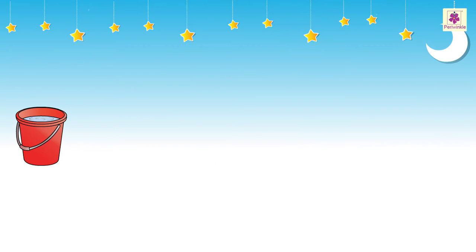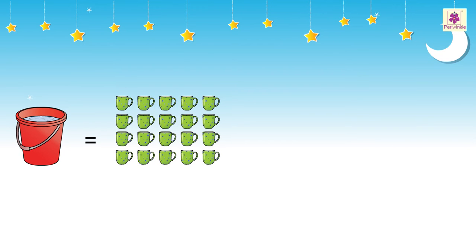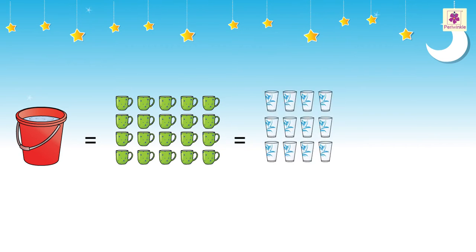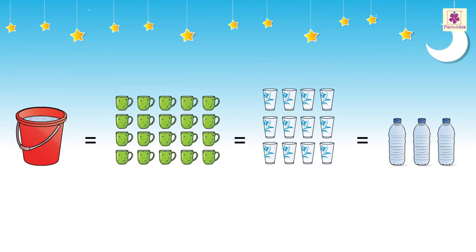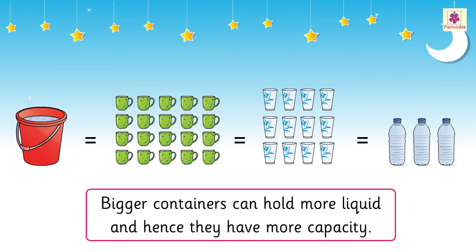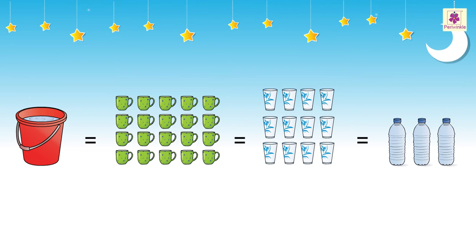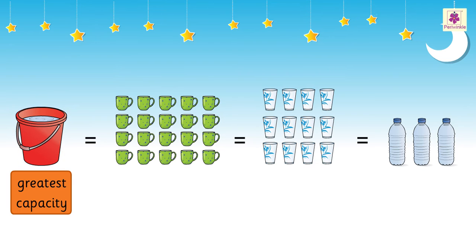Look at this bucket. It can hold 20 mugs of water, or 12 glasses of water, or 3 bottles of water. Bigger containers can hold more liquid and hence they have more capacity. We see that amongst the 4 containers, the bucket has the greatest capacity and the mug has the least capacity.